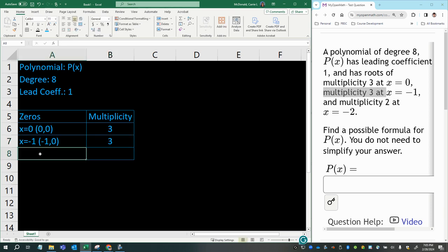And multiplicity of two at x equals negative two. So we have x equals negative two as another root, or zero, of the function. So that would result in the ordered pair (-2, 0), with a multiplicity of two.